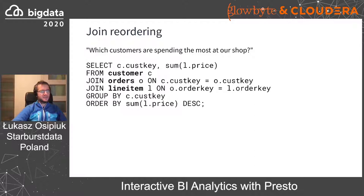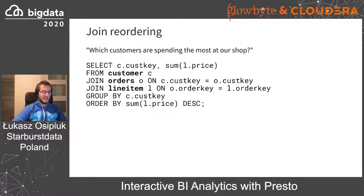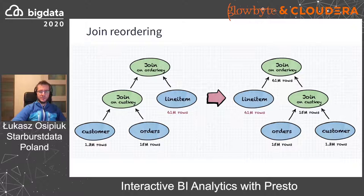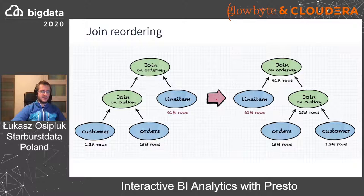These optimizations can be applied to queries joining more than two tables. Let's look at an example query to determine which customers spend the most money in our shop. We join the customers table with the orders table, then join with the line item table to access individual items ordered, and apply aggregation and sorting. Without cost-based optimizer, the syntactic join order is applied — and as you can see, the biggest table, line item, is used as the right table in the join, resulting in high memory consumption. With CBO, joins are reordered so that data processing is as streamlined as possible and the hash tables being built are smaller.